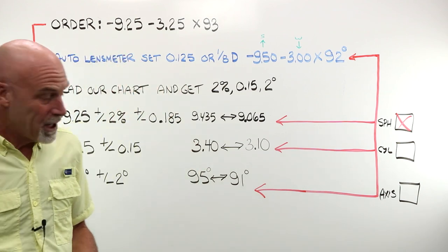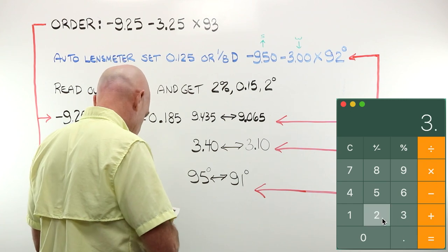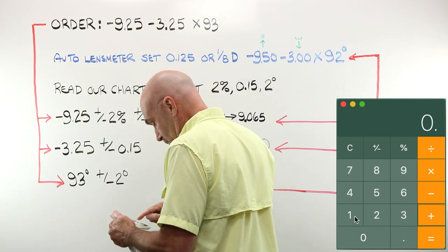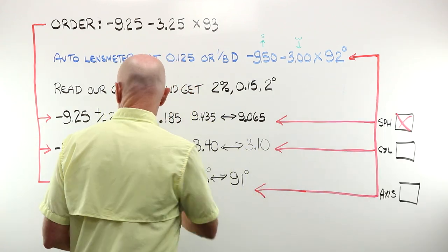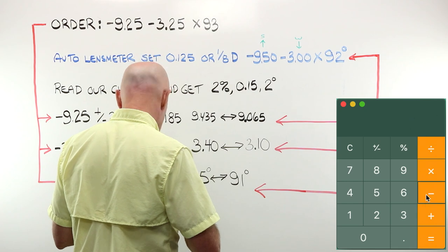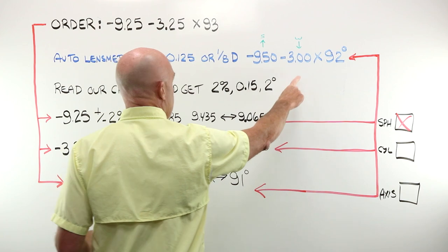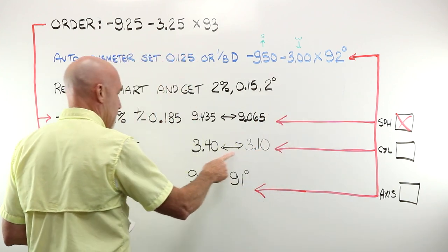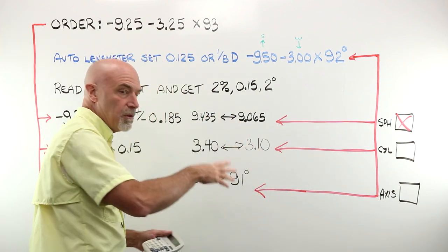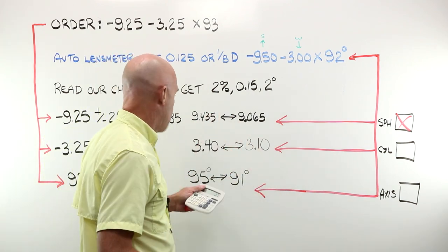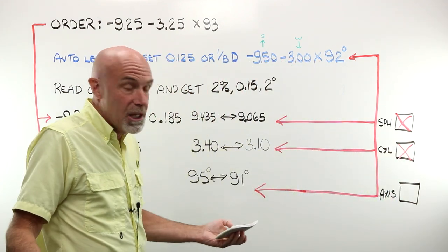Let's see what happens with our cylinder. Our cylinder 325 plus 0.15 gives us 3.40, 3.25 minus 0.15, 3.10. Does our three fall between here and here? No, it would be here. It's outside the tolerance range for this given power. Cylinder? No. I'm going to have to reject this job.